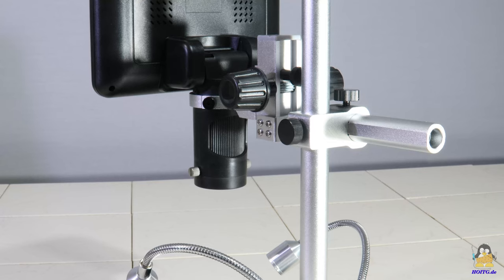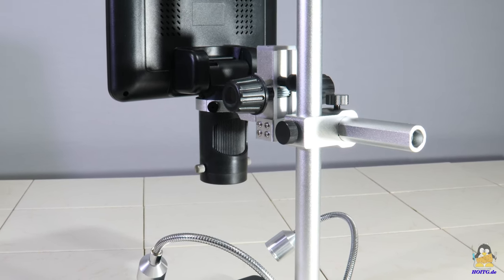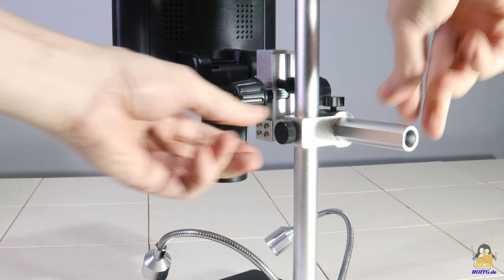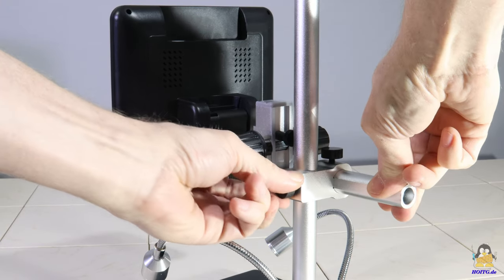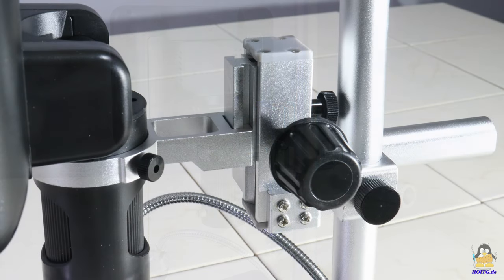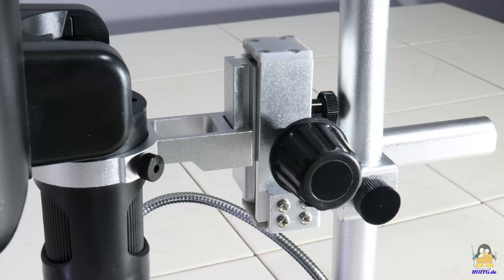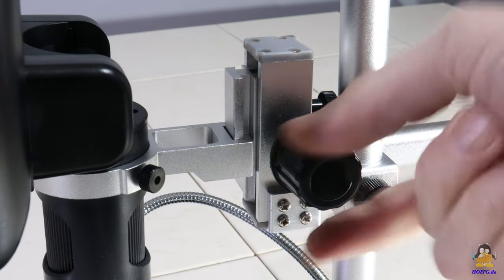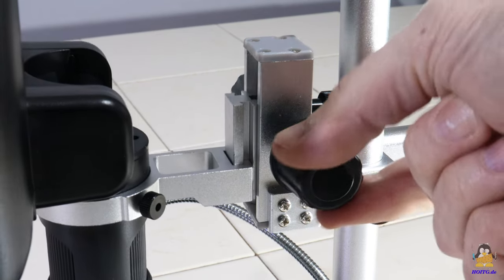The base and bracket are made of metal and look sufficiently solid. The height of the microscope can be roughly adjusted along the tube and fixed at any position with a knurled nut. The fine tuning is done via an adjusting wheel, with the help of which a stroke of up to 29mm is available.